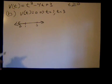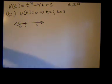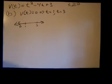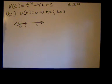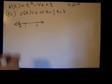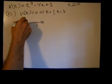Between 0 and 1, we test a value of t = 1/2. Plugging into the velocity function: (1/2)² = 1/4, minus 4·(1/2) = 8/4, so that's negative 7/4. Then negative 7/4 plus 3: 3 is 12/4, and 12/4 minus 7/4 is 5/4, which is a positive number.